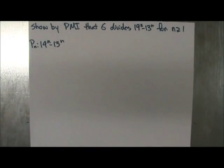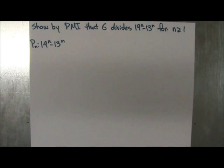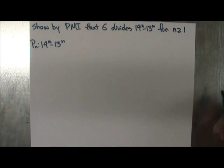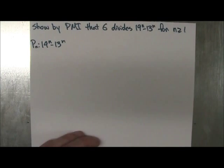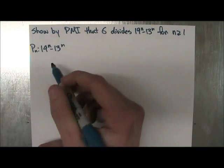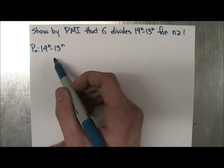Okay, so this is the problem. It says show by PMI that 6 divides 19^n minus 13^n for n greater or equal to 1. So you should be able to see right away that P_n is 19^n minus 13^n.